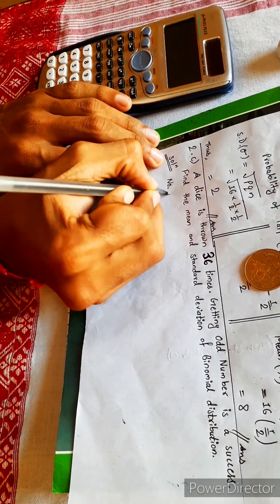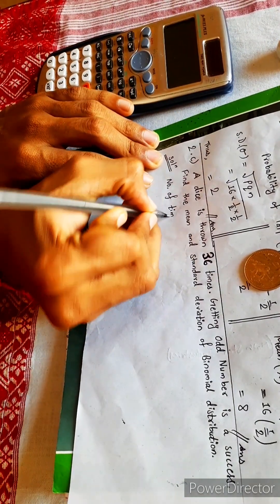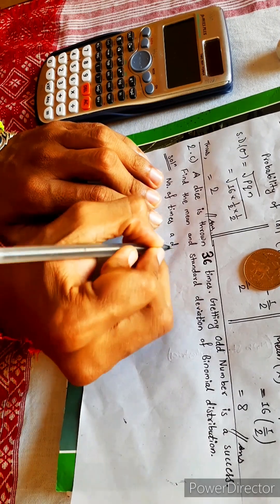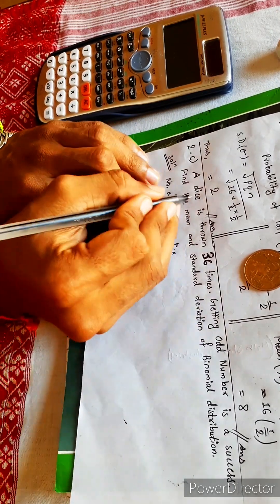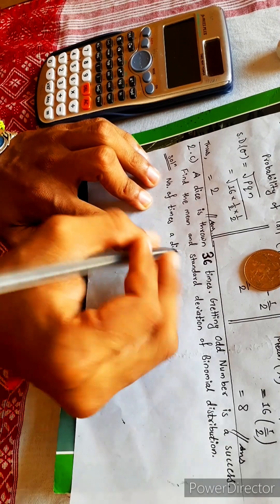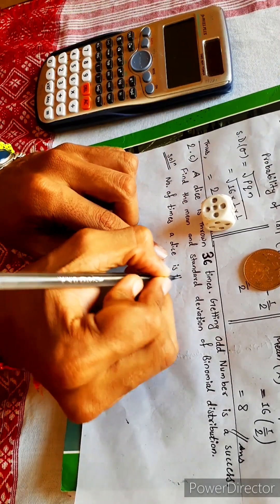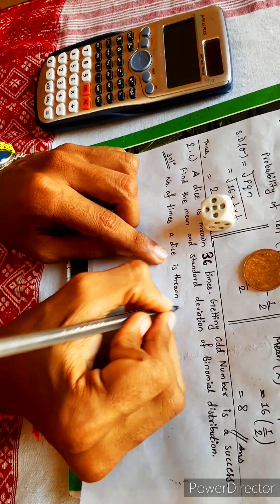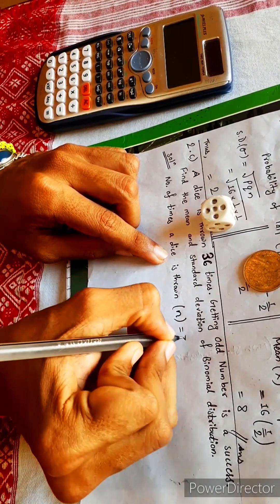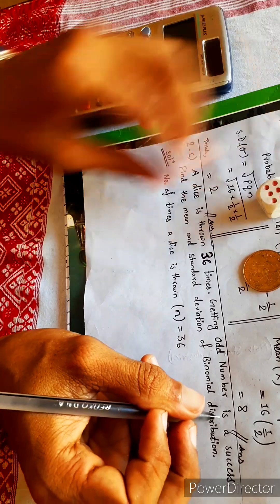So let's write number of times our experiment is repeated — number of times our dice is thrown. This is called a die, but we understand by saying dice. Number of times our dice is thrown, this is represented by n. n equals to 36. Getting odd number is success.